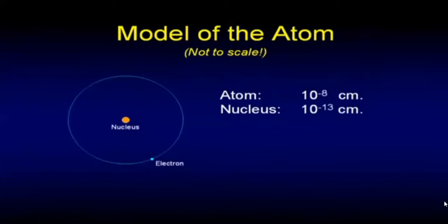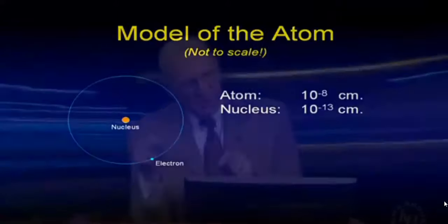Now, we know that the atom itself is in the neighborhood of 10 to the minus 8 centimeters. Point zero, zero, zero, eight zeros, and eight. It's a very, very tiny part of a centimeter. The nucleus of that is 10 to the minus 13 centimeters, much smaller. 13 zeros.